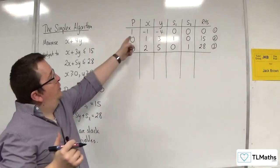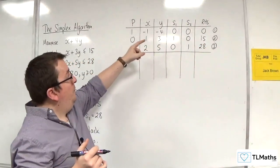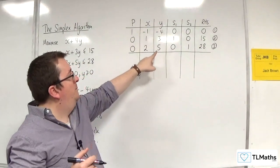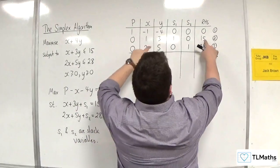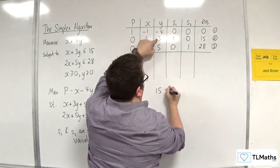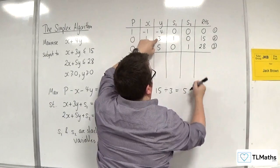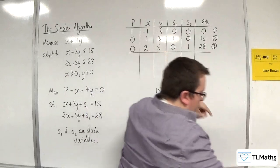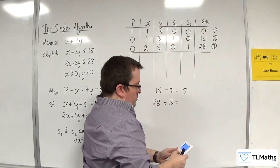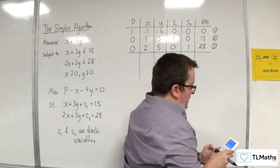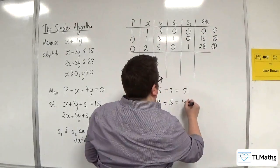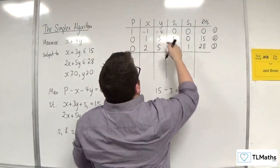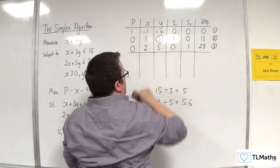I look along the top row and look for the most negative value, which is minus 4. So this is going to be my pivot column. I then do 15 divided by 3, which is 5, and 28 divided by 5, which is 5.6. We go with the smaller of the two, which is 5, and so that tells you that the 3 is going to be your pivot.